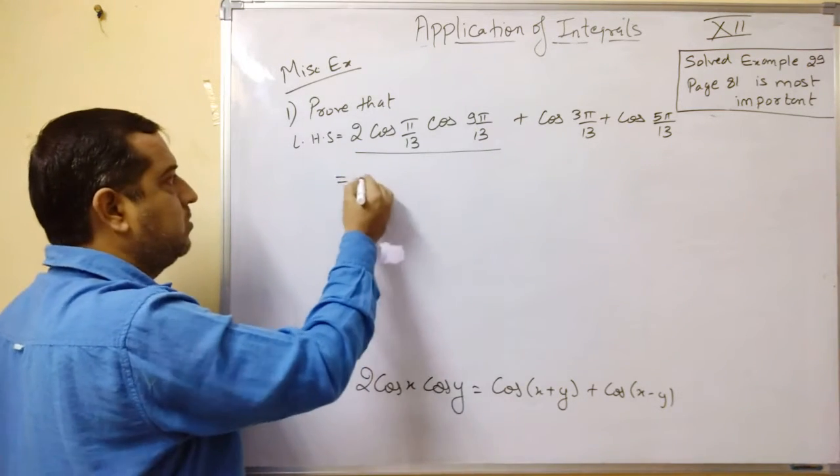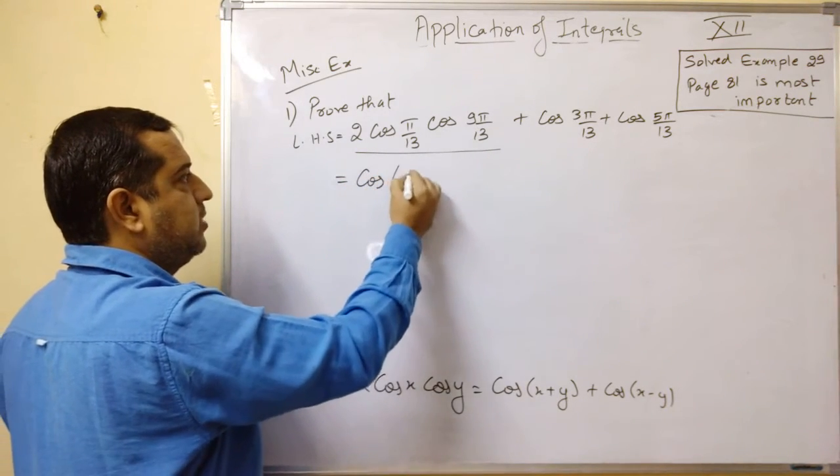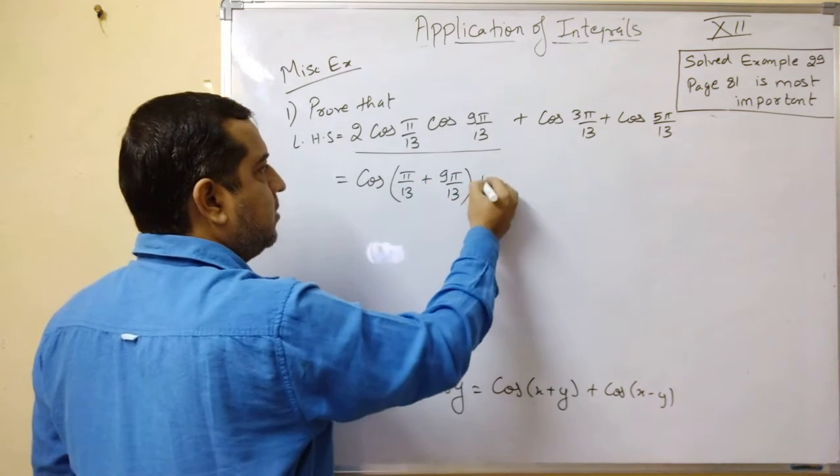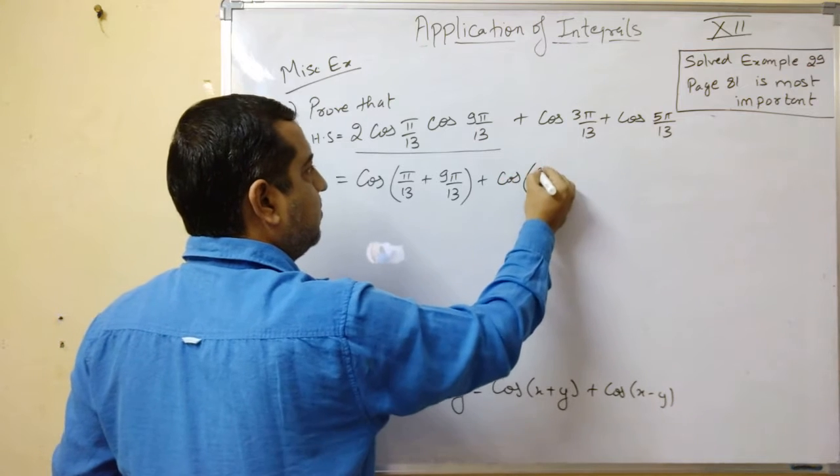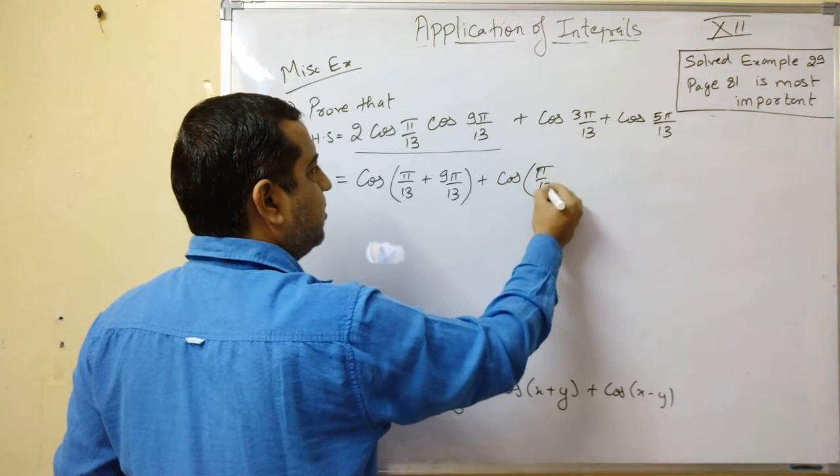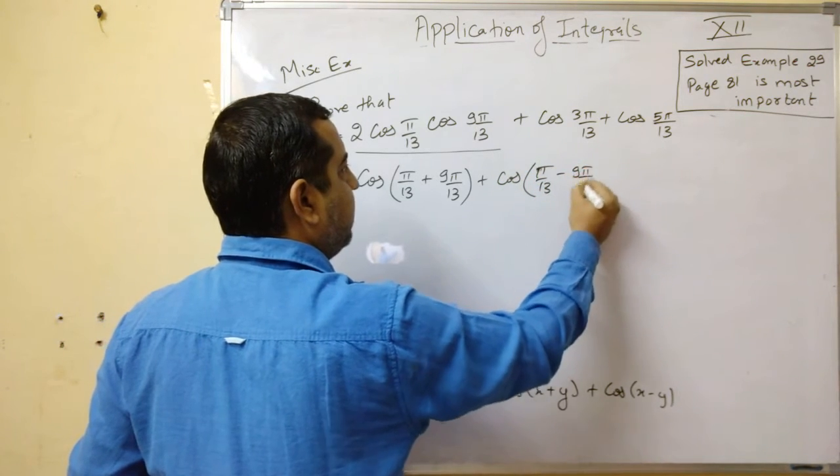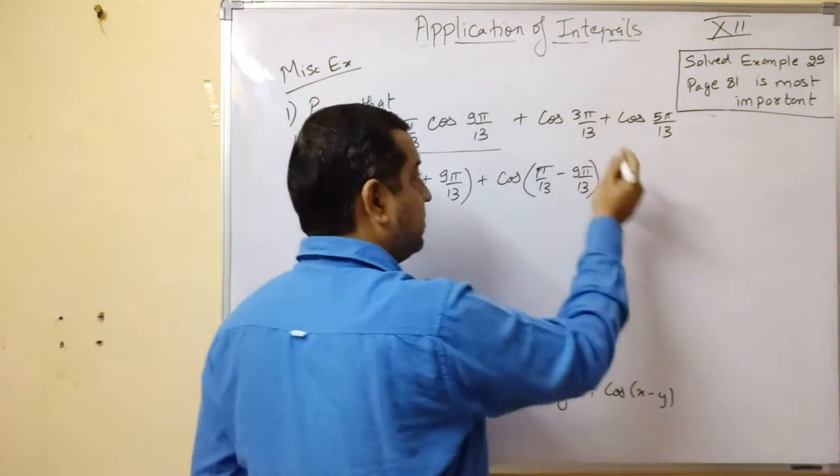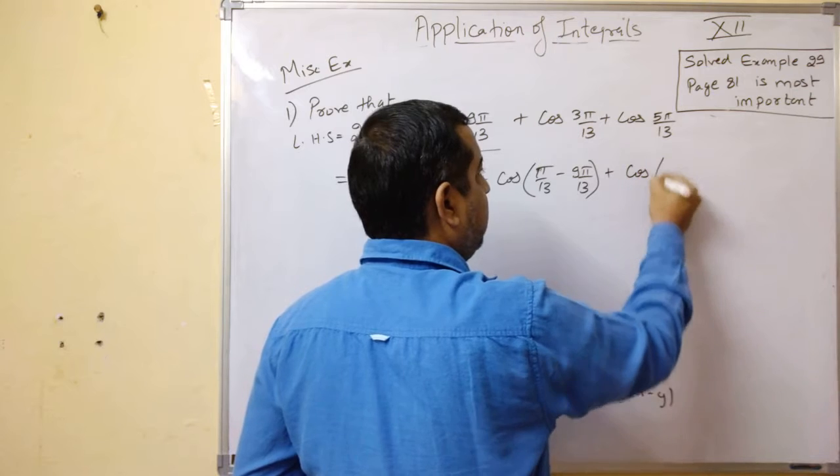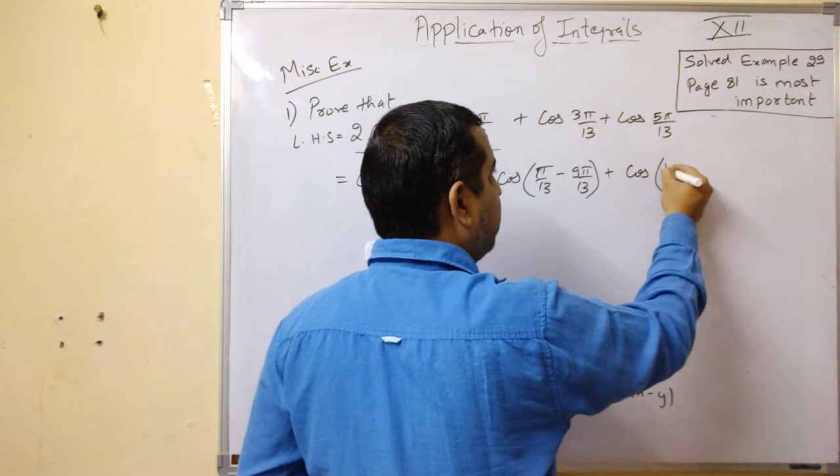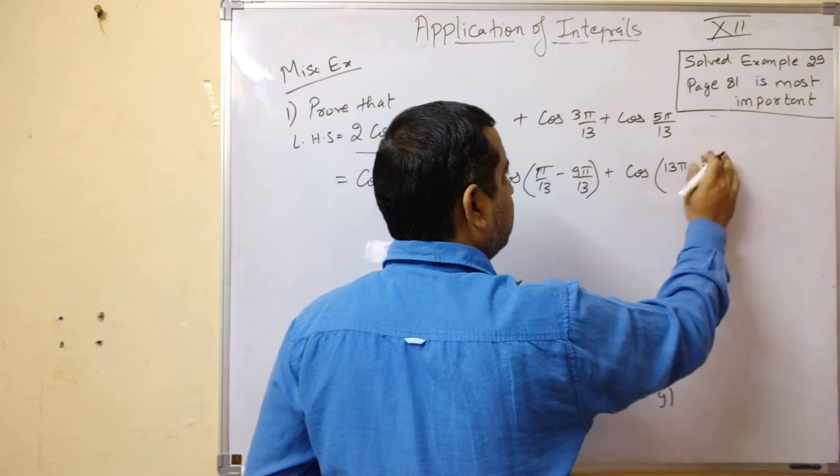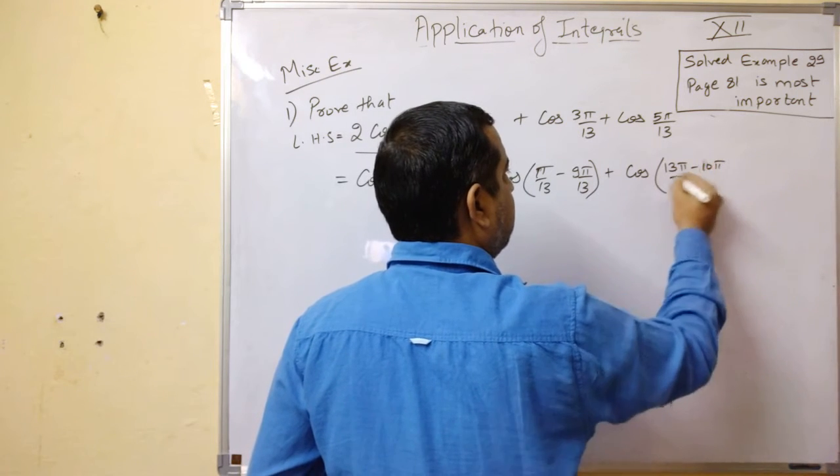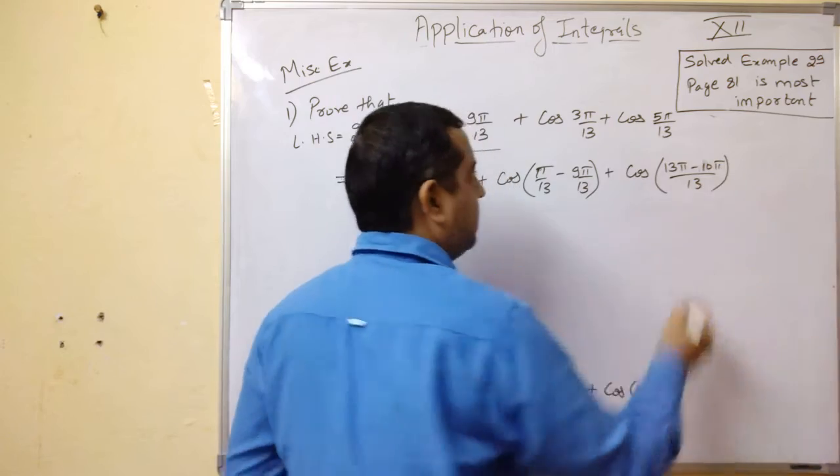This gives you cos(x+y), which means π/13 + 9π/13, plus cos(x-y), which means π/13 - 9π/13. See this. Here we can write in the numerator, 10 can be written as (13π - 10π)/13.